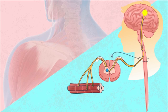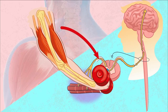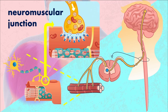I want my biceps to contract. My brain is gonna send a signal down via the spinal cord, and then out of the spinal cord via motor neurons to that particular muscle — in this case, my biceps brachii — so that it can contract. I make that decision that it's time to move that heavy weight that's in my hand. The signal comes via the motor neurons to the muscle fibers that make up my biceps. The connection between one of the motor neurons and the muscle fiber is called a neuromuscular junction.